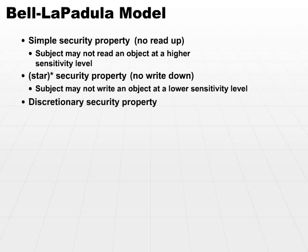Last but not least is the discretionary security property. This means that there is an access matrix that will enforce discretionary access control. In addition to the other properties, there is an access matrix to decide who can access what documents at which particular point in time. That's the Bell-LaPadula model.